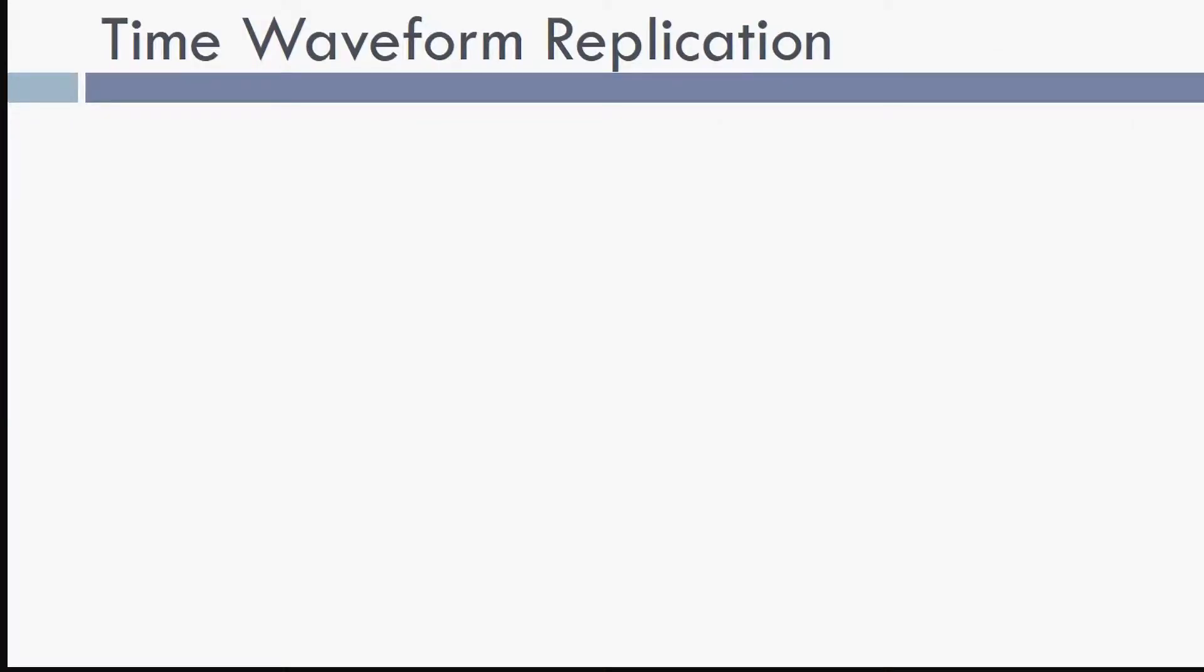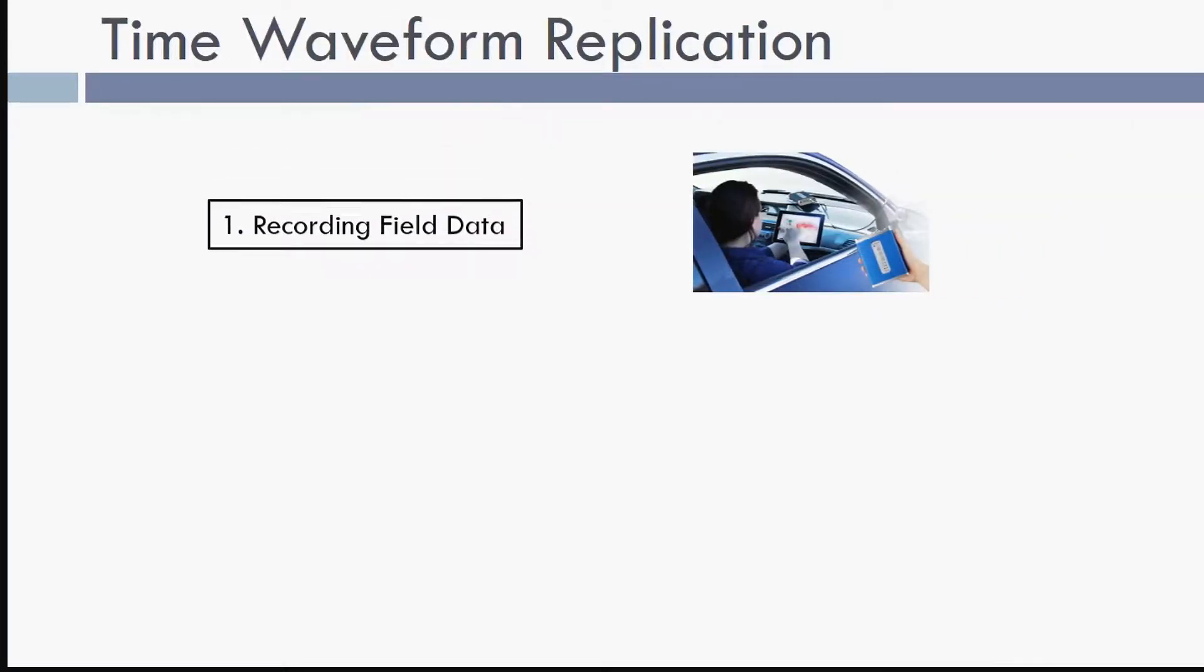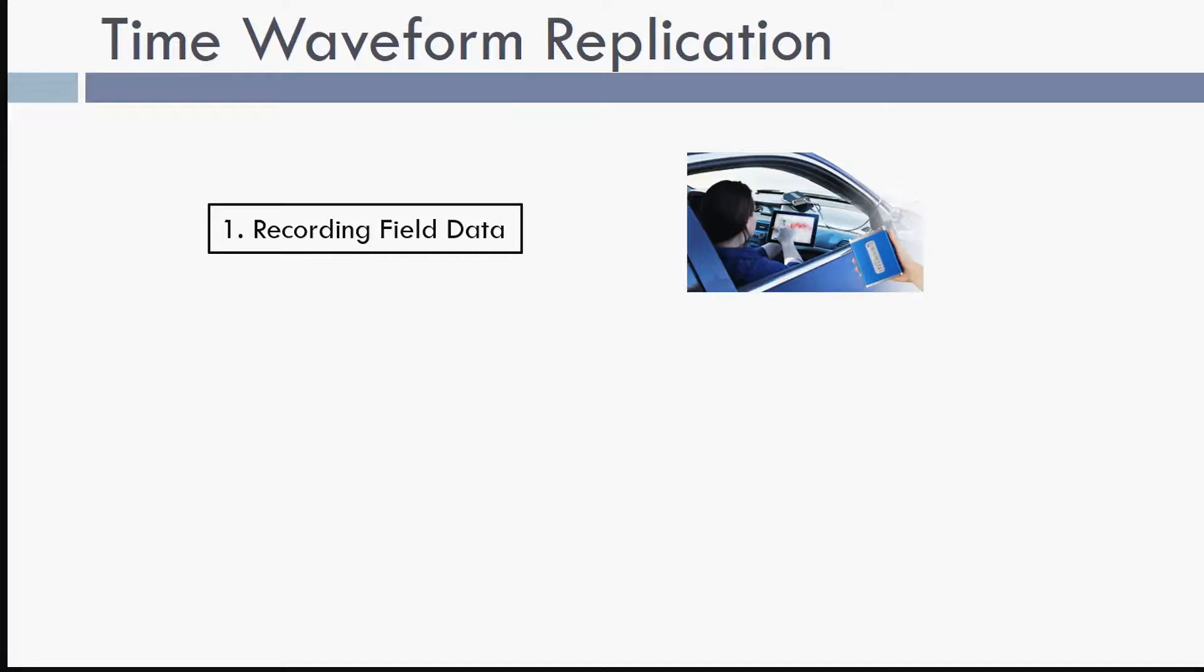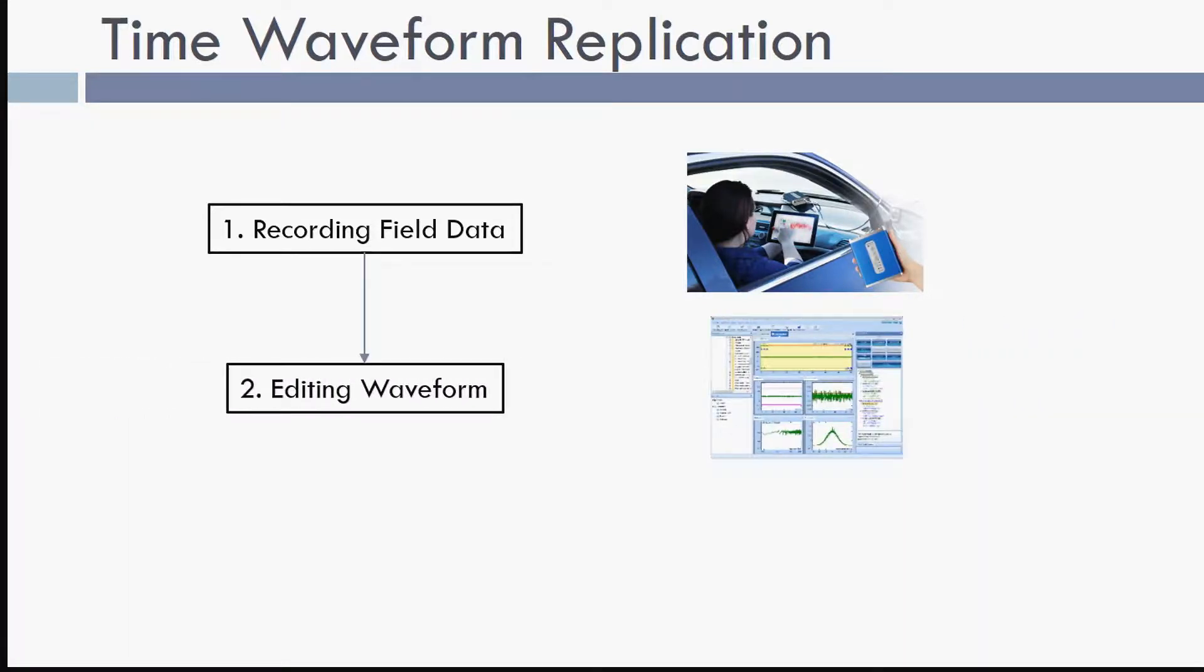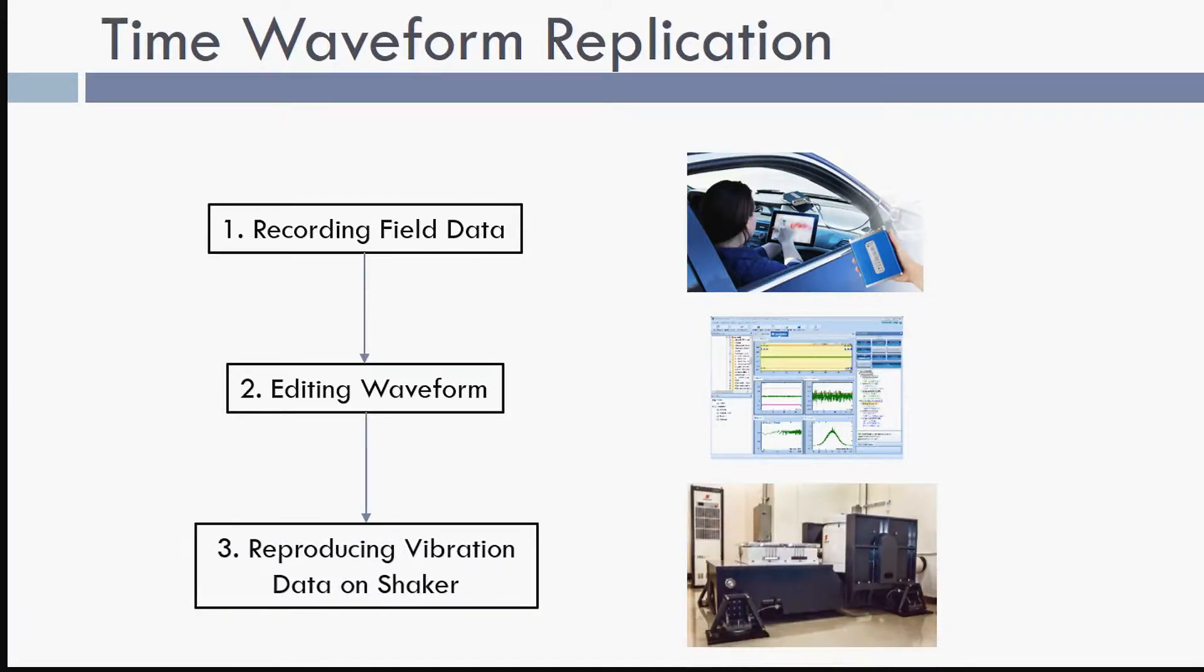A portable instrument like the COCO80 from Crystal Instruments is ideal for taking vibration data from the field. After vibration data is taken, it will be edited so it can be accurately reproduced on the shaker. Crystal Instruments invented a unique algorithm to accurately reproduce a waveform that can be hours or days long.